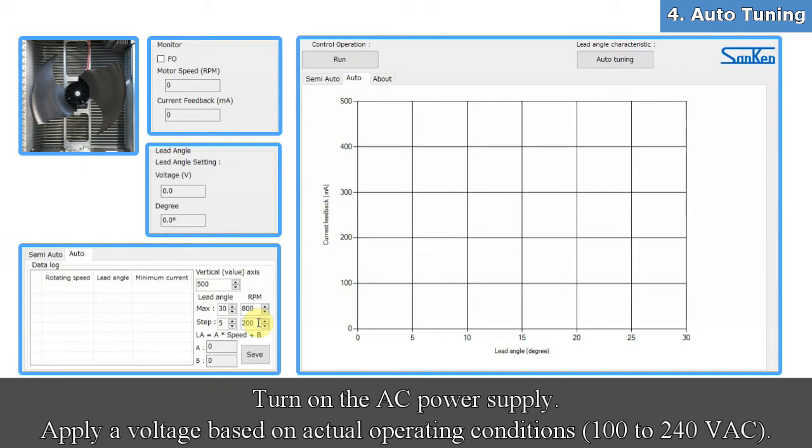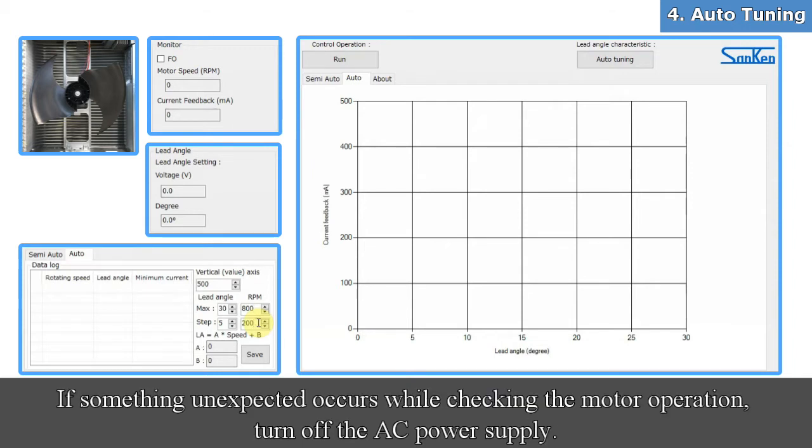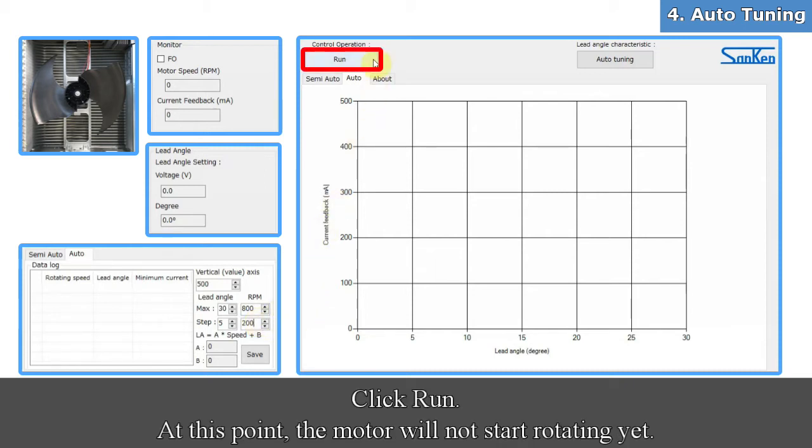Turn on the AC power supply. Apply a voltage based on actual operating conditions. If something unexpected occurs while checking the motor operation, turn off the AC power supply. Click run. At this point, the motor will not start rotating yet.